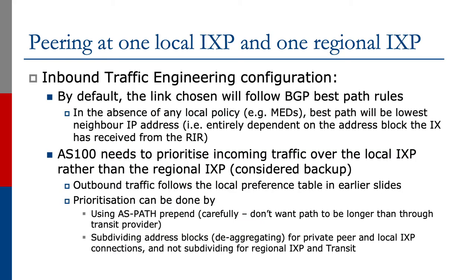For inbound traffic engineering, by default it will follow BGP best path rules. In the absence of any policy, it could well be by neighbor IP address, again dependent on the address block the exchange point has received from the registry. As with the outbound example, AS100 will need to prioritize incoming traffic over the local IX rather than the regional IX. For members participating in both exchanges, we want to consider the regional as the backup. Outbound traffic follows the local preference table from earlier slides, and we will probably need to use AS path prepend, communities, or subdividing address blocks to ensure that the return traffic comes back over the local IX and not over the regional. We won't want outbound traffic to go over the local IX and the return from the member to come back over the regional IX.